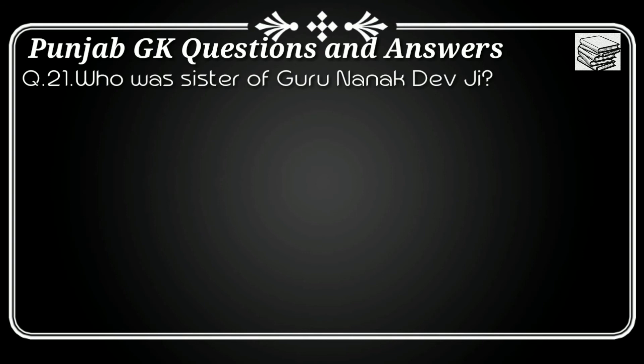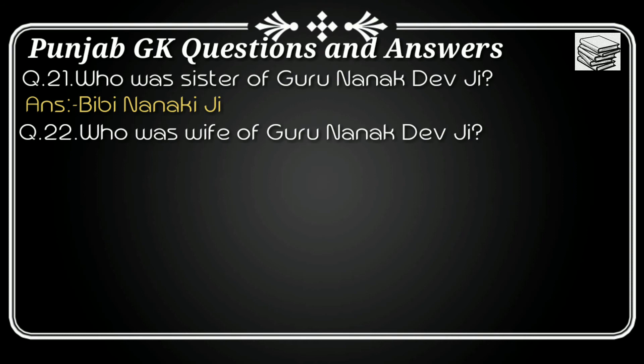Question number twenty one: Who was the sister of Guru Nanak Dev ji? The answer is Bibi Nanaki ji. Question number twenty two: Who was the wife of Guru Nanak Dev ji? The answer is Sulakhni Devi ji.